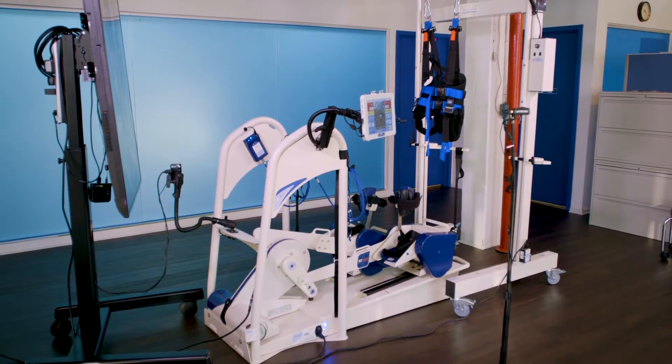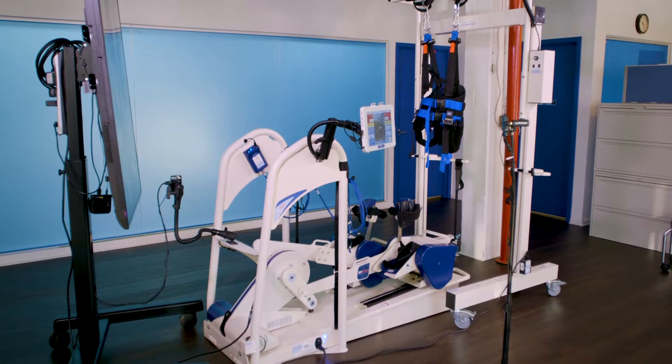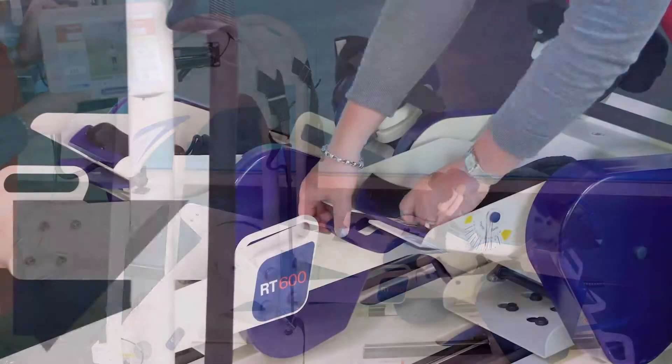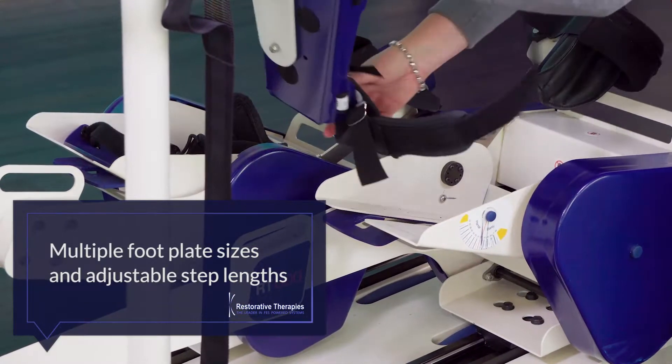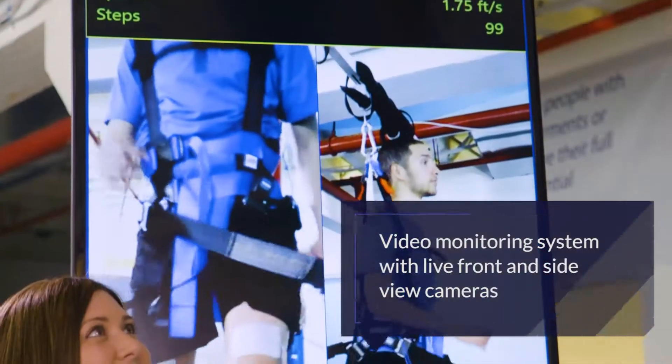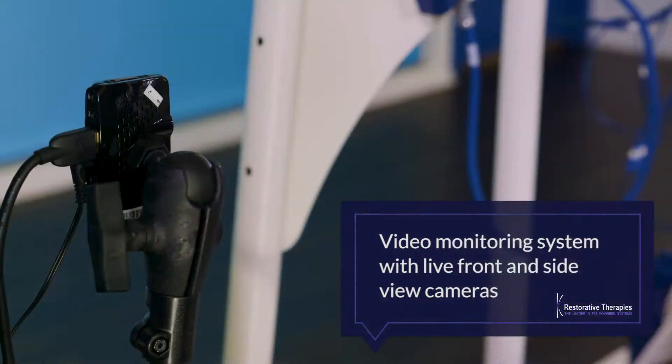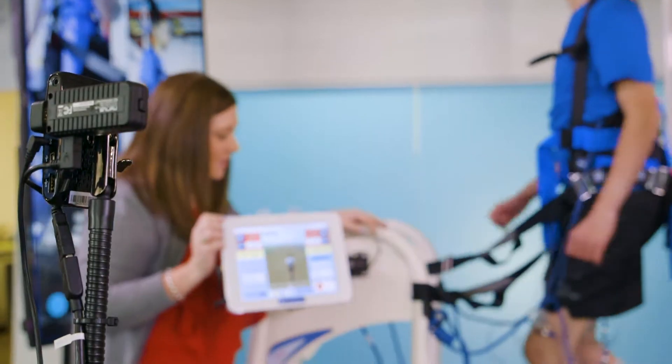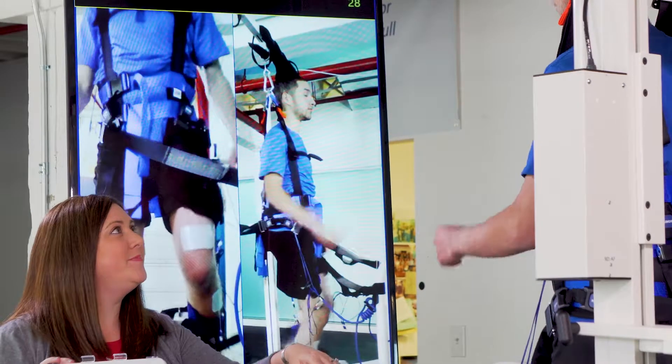The RT600 has many unique features which contribute to its important clinical benefits. Some of those features include multiple footplate sizes and adjustable step lengths, pediatric adaptations, and a video monitoring system with live front and side view cameras that assist in maintaining a heads-up stepping position and enhance patient monitoring by the clinician.